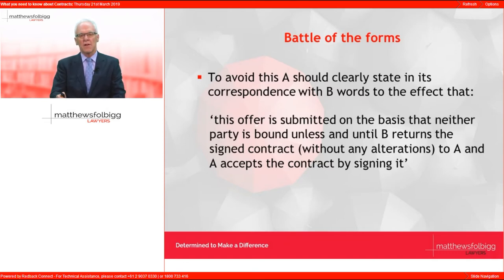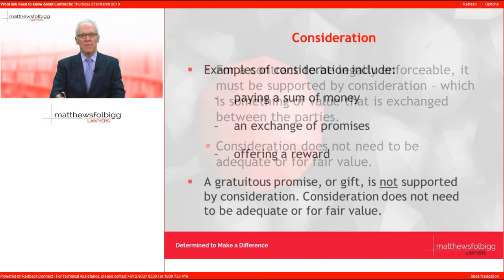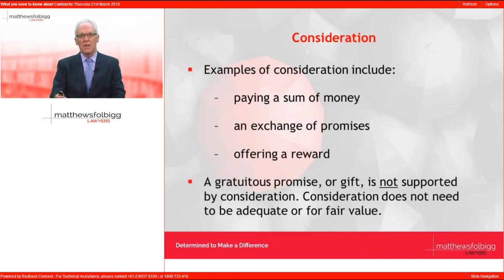The next element is consideration — something of value exchanged between the parties. Examples include A agreeing to supply goods to B in return for payment, which is the most obvious case. An exchange of promises between A and B is called a bilateral contract. Where A pays an advertised reward to B for finding his lost dog, that would be called a unilateral contract.